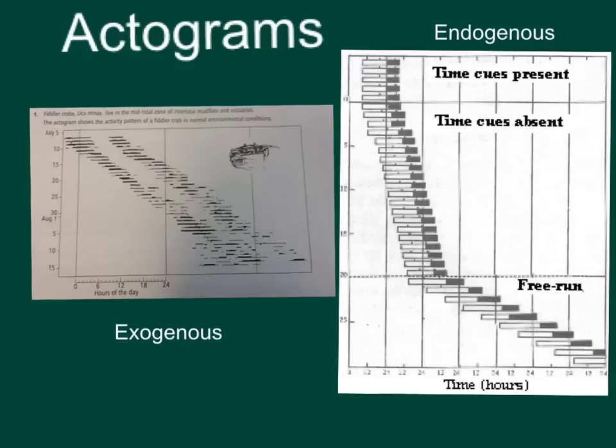Actograms are read from top to bottom. The activity is shown by horizontal bars. Each bar is coded into light and dark cycles.